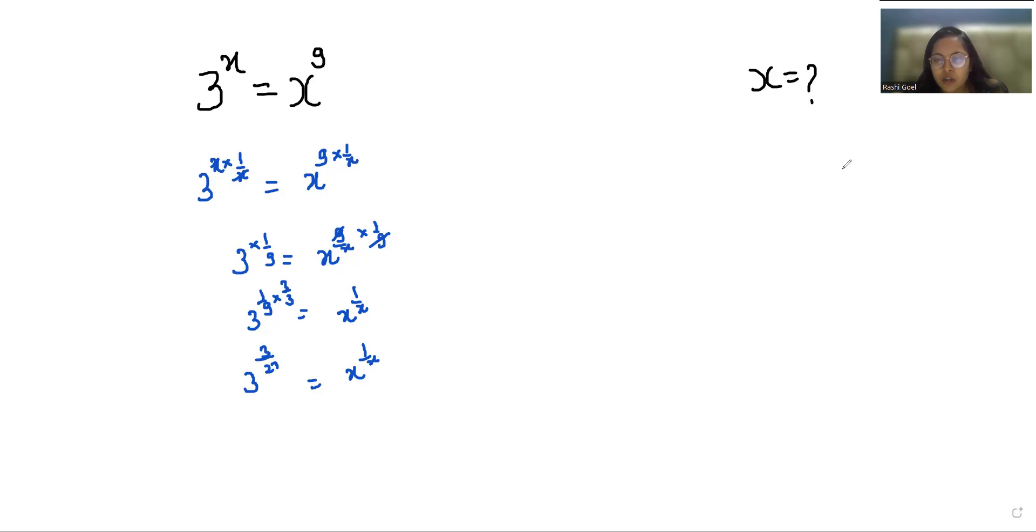So according to exponent rule, a power m power n equals a power m times n, or a power n power m.